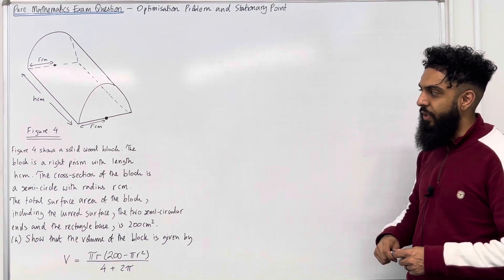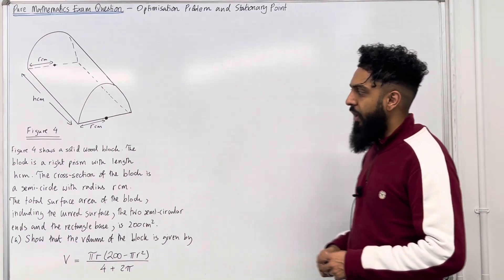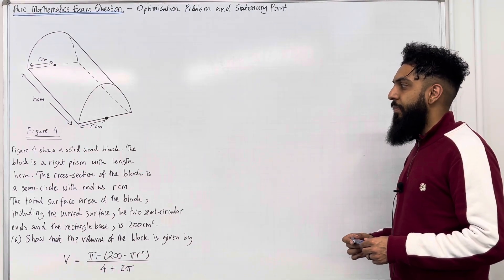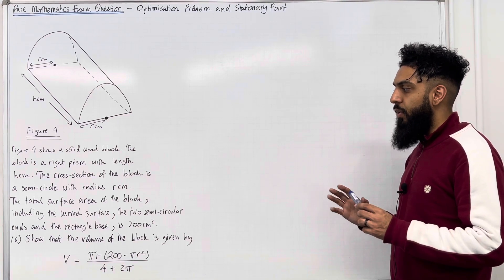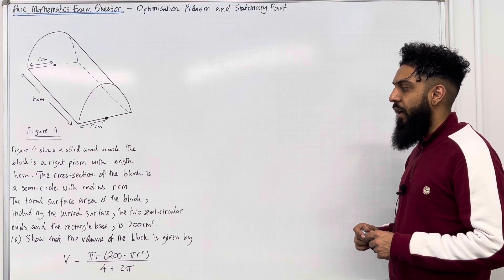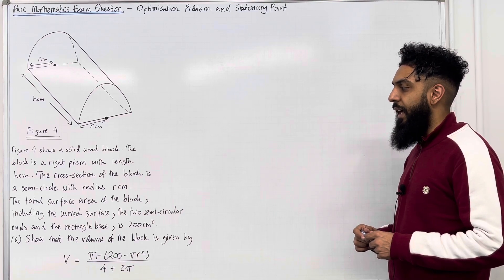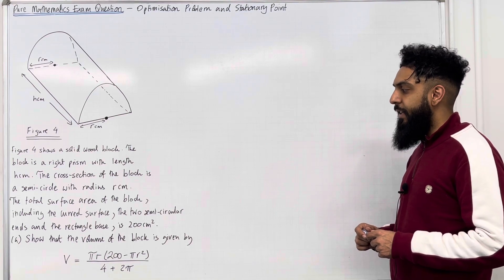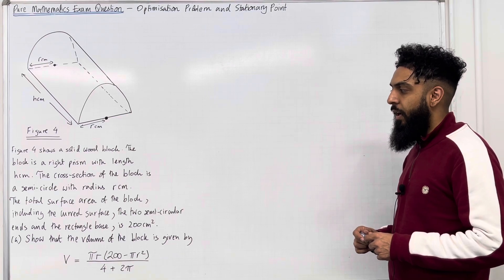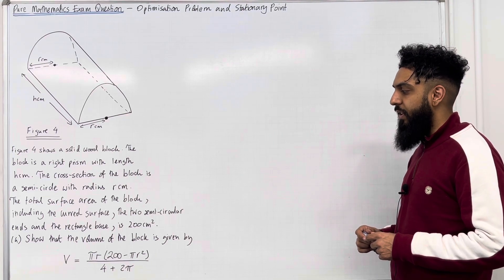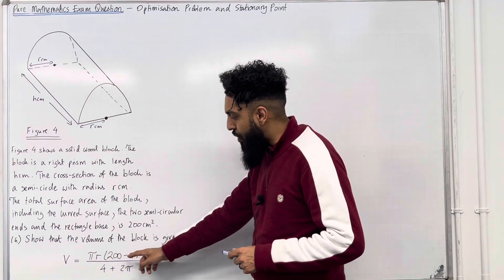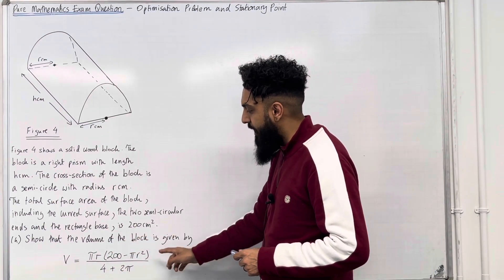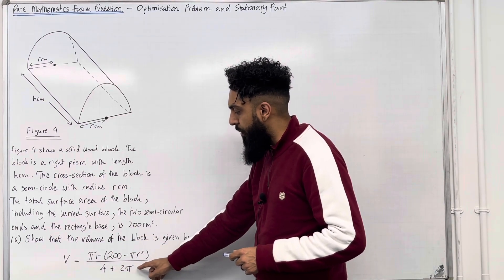Here is the exam question. Figure 4 shows a solid wood block. The block is a right prism with length h centimetres. The cross section of the block is a semicircle with radius r centimetres. The total surface area of the block, including the curved surface, the two semicircular ends and the rectangular base, is 200 centimetres squared. Part A: show that the volume of the block is given by V equal to pi r multiplied by (200 minus pi r squared) all over (4 plus 2 pi).